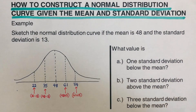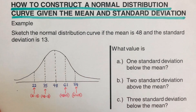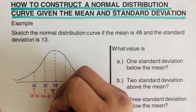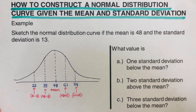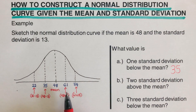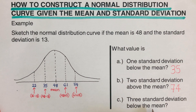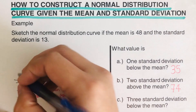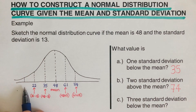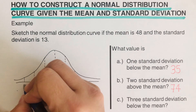Now we're ready to answer the questions. One standard deviation below the mean is 35. Two standard deviations above the mean — counting from the mean, one, two — that's 74. For three standard deviations below the mean, I subtract 22 minus 13, which gives us 9.